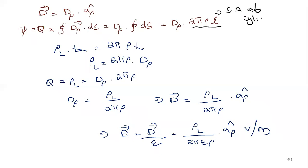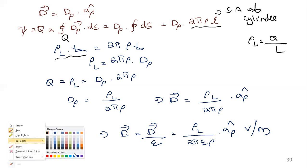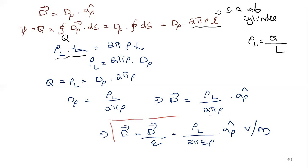Setting the enclosed charge equal to the flux: rho-L times L equals D_rho times two pi rho L. The L terms cancel, giving D_rho equals rho-L over two pi rho. Therefore D equals rho-L over two pi rho into a-hat-rho. The electric field E = D/epsilon, so E equals rho-L over two pi epsilon rho into a-hat-rho. This is the result for the line charge case.